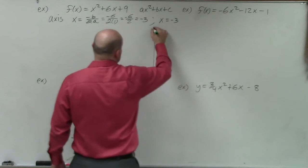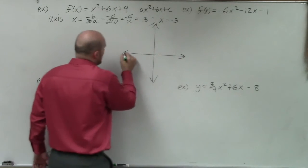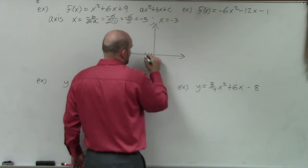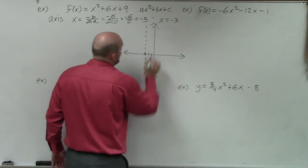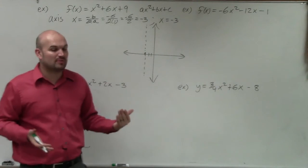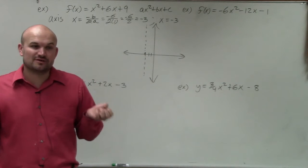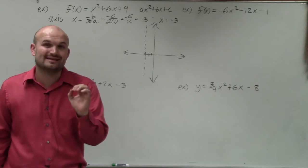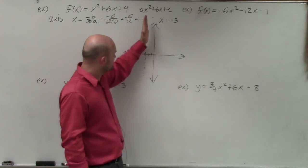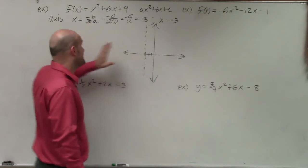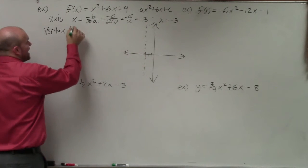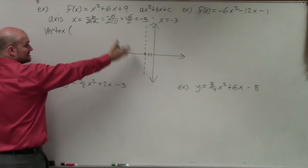When graphing this, that's the first thing we're going to want to do — it gives me an understanding of where this graph is symmetrical about. I graph a nice dashed line, because x equals negative 3 creates a vertical line. Therefore, I know that this line not only cuts my parabola in half, but also that is going to be where my vertex — the main important point on a parabola — is going to lie. If I know the axis of symmetry has an x value of negative 3, the vertex, since it lies on the axis of symmetry, also has that x value.